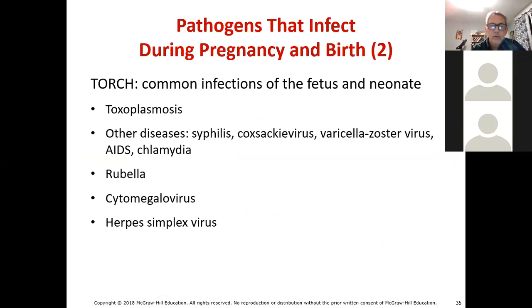TORCH is an acronym for common infections of the fetus and neonate. T stands for toxoplasmosis, a eukaryotic pathogen transmitted through animal feces. O stands for other diseases: syphilis, Coxsackievirus, varicella-zoster virus, AIDS, and chlamydia. R stands for rubella, C for cytomegalovirus, and H for herpes simplex virus.